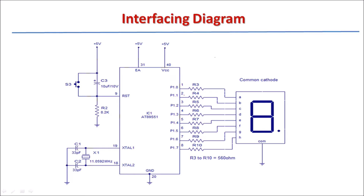Here port 1 is used to connect the segments A, B, C, D, and H of this 7-segment display. We can use any other port also instead of port P1. Here a reset circuit is used and a crystal circuit is used. The display used is a common cathode display.